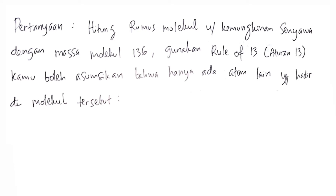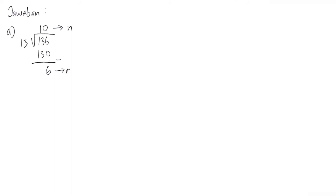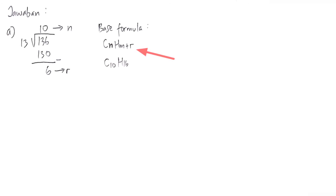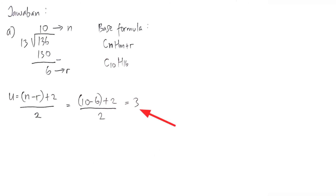Pertanyaan: hitung rumus molekul untuk kemungkinan senyawa dengan massa molekul 136 menggunakan rule of 13. Bagian A mengandung C, H, dan 2 oksigen; bagian B mengandung C, H, dan 2 nitrogen; bagian C mengandung C, H, 2 nitrogen, dan 1 oksigen. Pertama, 136 dibagi 13 sama dengan 10, sisa 6. Jadi N=10, R=6, rumus dasarnya C10H16. U atau IHD: N dikurang R ditambah 2 dibagi 2, yaitu 10 dikurang 6 ditambah 2 dibagi 2 sama dengan 3. Dia memiliki 3 ikatan rangkap atau kombinasi lain.